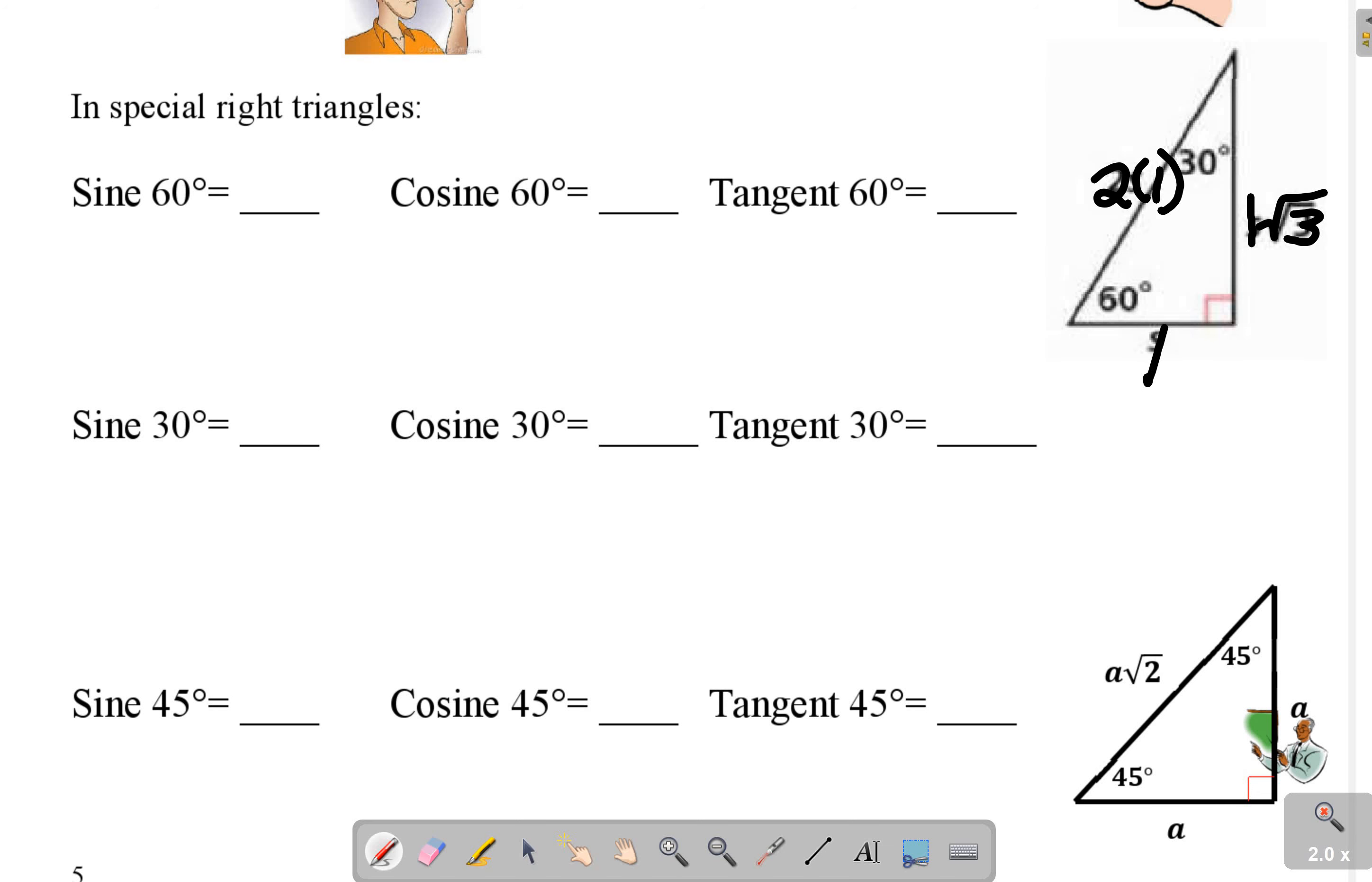So sine of 60 - sine is opposite. So from 60 our opposite is root 3 over our hypotenuse, which is 2. You would leave it just like that. Cosine is adjacent over hypotenuse. Our adjacent is 1, and our hypotenuse is 2. Tangent would be opposite, which is root 3 over adjacent, which is 1.